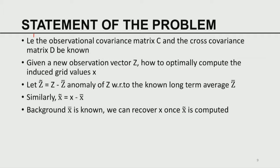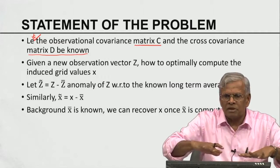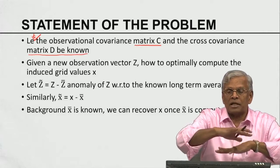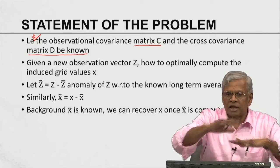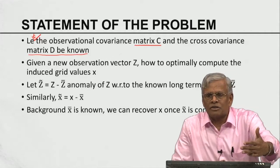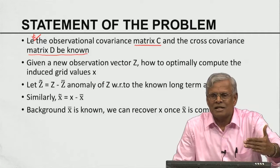What is the statement of the problem? Let the observational covariance C and the cross covariance D be known. C and D represent the stationary values of the covariance between observations and the cross covariance between observations and the grid. Because the underlying processes are stationary, C and D do not change in time — especially if you consider a long time series.